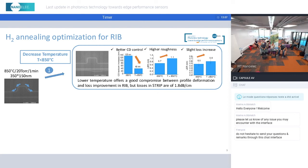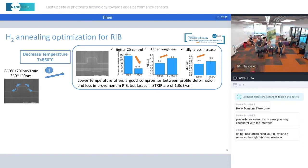However, it is also the case that with such conditions, the roughness is higher and then the loss decrease is lower. But we still get some acceptable loss with this condition for the RIB structure of about 0.6 dB per centimeter. Unfortunately, such treatment at low temperature does not provide good losses in strip, since 1.8 dB per centimeter was measured.